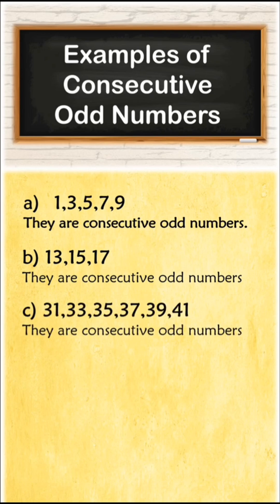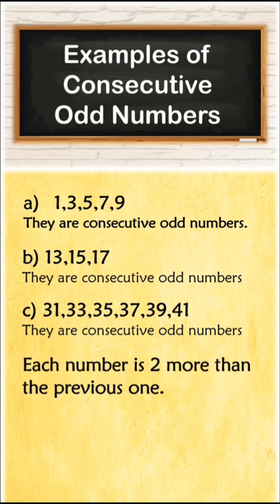Next example, 31, 33, 35, 37, 39, 41. All these are odd numbers and at the same time they are consecutive odd numbers. If you want, you can check the difference between the numbers. The difference between the numbers is 2.